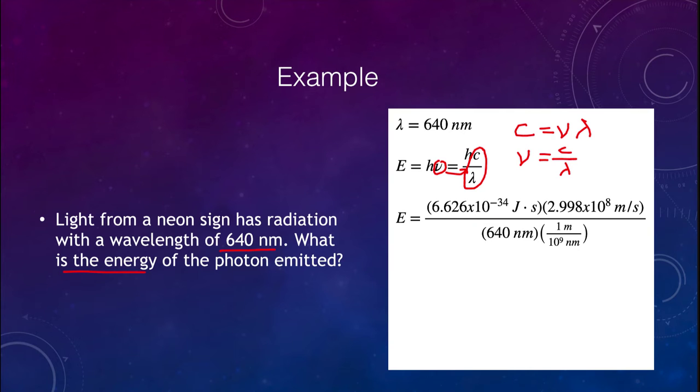We can substitute C divided by lambda for frequency. When we put in all of our numbers, we know Planck's constant, the speed of light, and the wavelength given in nanometers. Remember we have to convert that to meters. We can then calculate that the energy of this photon is 3.10 times 10 to the negative 19th joules.